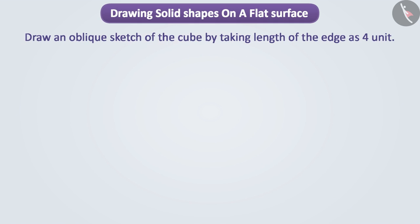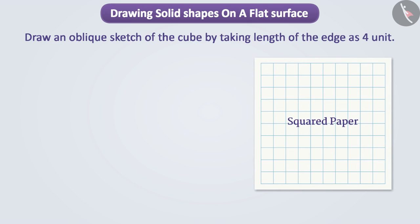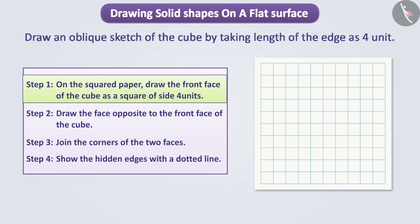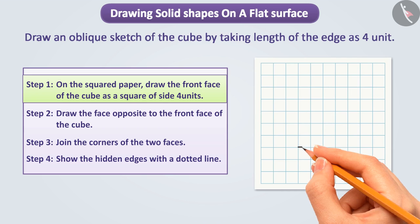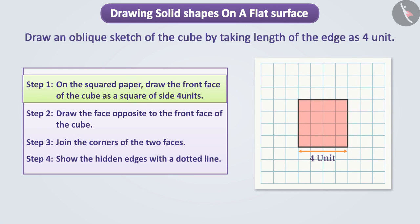Suppose we have to draw an oblique sketch of the cube by taking length of the edge as 4 unit. For this, we will use a square paper. Step 1. First of all, we will draw the front face of the cube as a square of side 4 units on the squared paper.